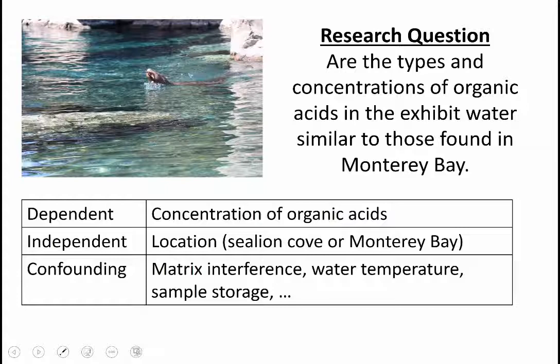The independent variable would be location. So Sea Lion Cove, Monterey Bay, perhaps you're collecting water samples from several locations or several days or from several times of day. But it would be the location primarily.